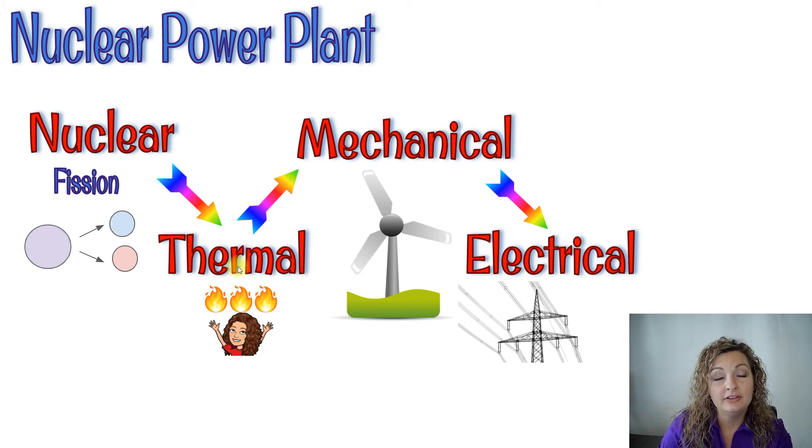What we do with that thermal energy is we heat up water and make steam. The steam turns a turbine, and that turning of the turbine is mechanical energy. So we're going from thermal energy to mechanical energy to turn and spin that turbine.